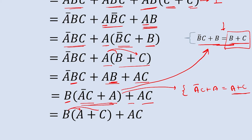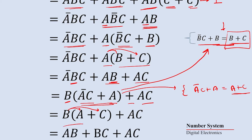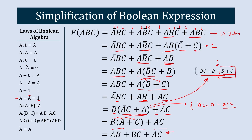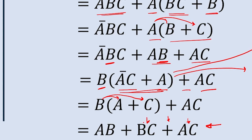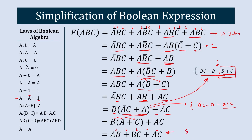Replacing the term gives us: B · (A + C) + AC. Multiplying B through gives: AB + BC + AC. This is the simplified version of the original equation. Now counting the gates needed: AND gate, OR gate, AND gate, OR gate, AND gate, AND gate — one, two, three, four, five. We need only 5 gates. Previously it was 14 — that is almost 33% of the original, meaning a 66% reduction in gate count and power consumption.